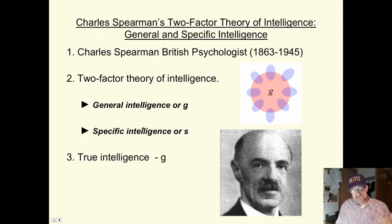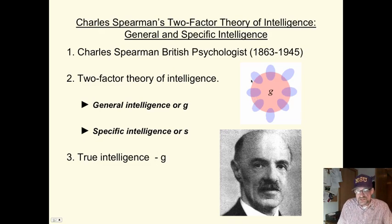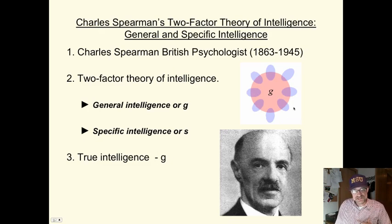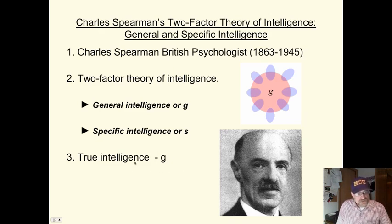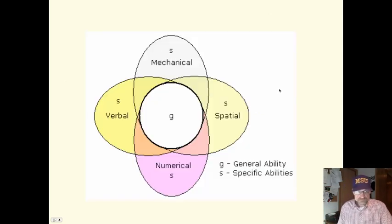The second factor is S, or specific intelligence — intelligence related to specific tasks, areas, or types of thinking, such as math, music, or tennis. General processing ability is applied to these specific areas. Intelligence utilizes both of these factors. He postulated that true intelligence is primarily related to G, this general processing ability — and then some specific abilities branch from that.